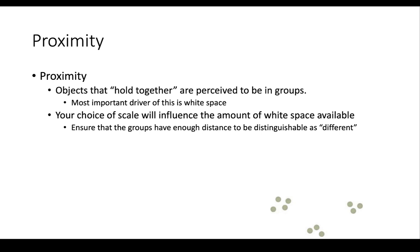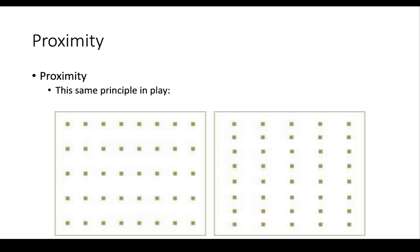Now, the most important driver of this is white space. So you're going to want to make sure that if you're trying to drive people's perception using proximity, that you use enough scale so that you have enough distance between the points to be distinguishable as clusters. Simply by having slightly different distance between the columns and the rows, we see these points represented as rows or columns. And that's the exact same graph, just tipped on its side.